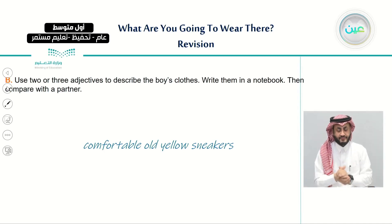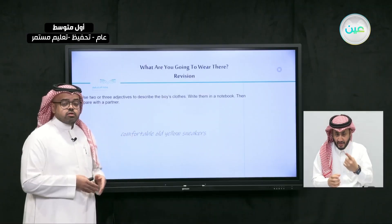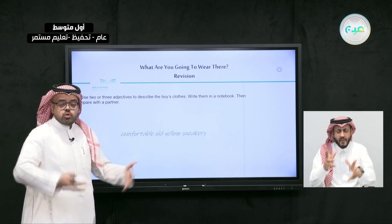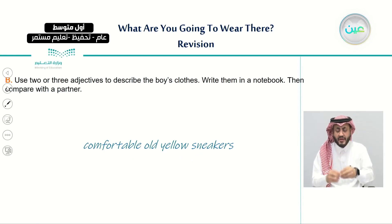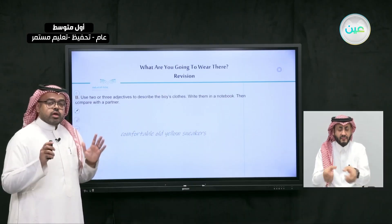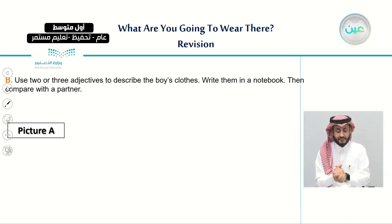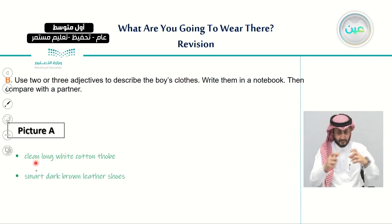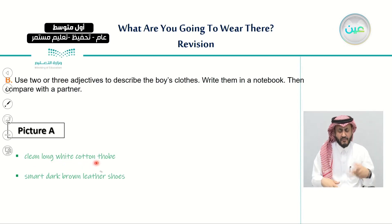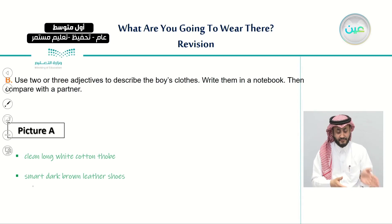For example, look at the boy's clothes and try to describe them with the adjectives you have, like: comfortable old yellow sneakers. We learned how to add more adjectives and put them in the appropriate order. For example, picture A: he has a clean long white cotton thobe, and he is wearing smart dark brown leather shoes.